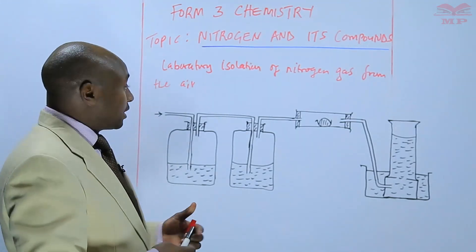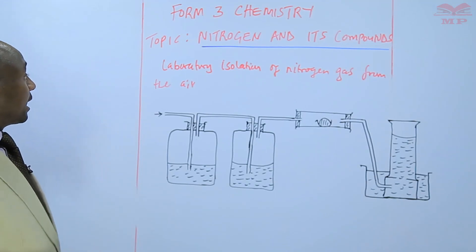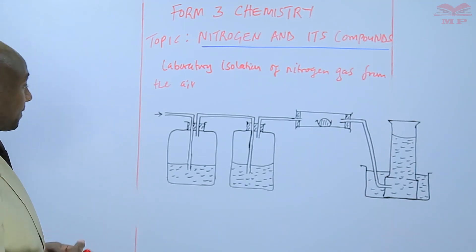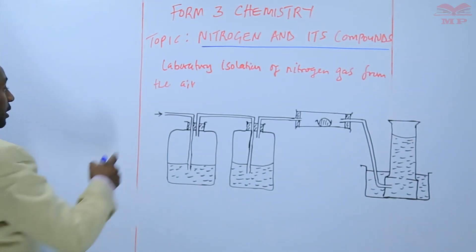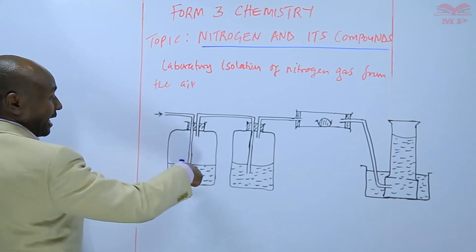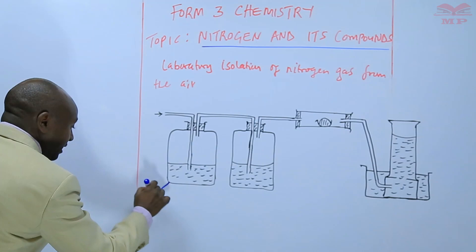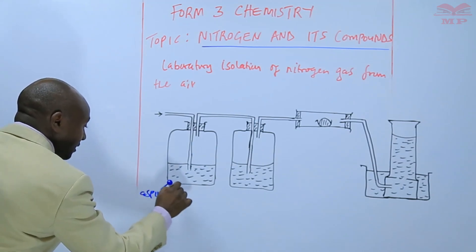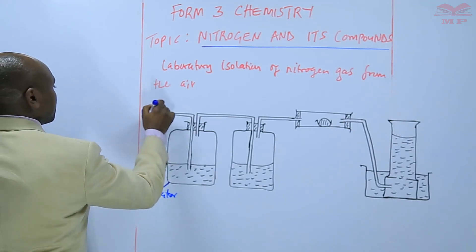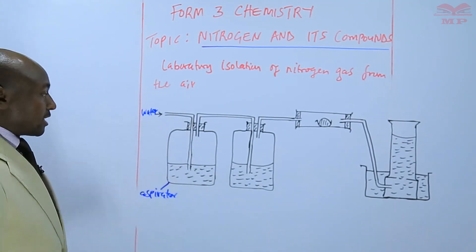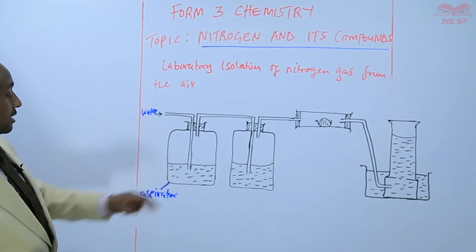The diagram is on the laboratory isolation of nitrogen from the air. To label the diagram, first of all we have an empty jar here — an empty aspirator at the beginning. Then we put water into that aspirator. As the water fills this particular aspirator,